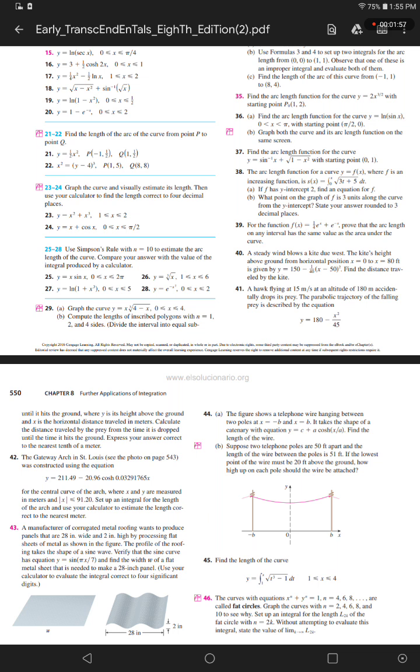For the function f of x equals 1 fourth e to the power x plus e to the power negative x, prove that the arc length on any interval has the same value as the area under the curve.